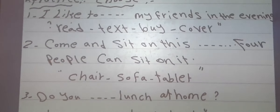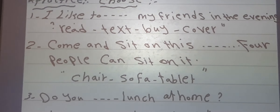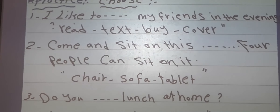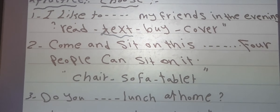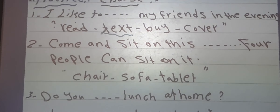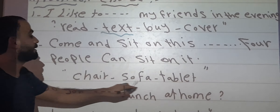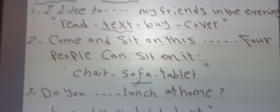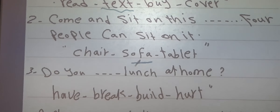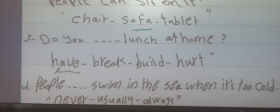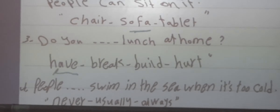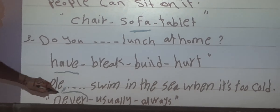Let's practice. Number 1: I like to _____ my friends in the evening — the right answer is text. I like to text my friends, because text means to send messages. Number 2: come and sit on this _____, four people can sit on it — the answer is sofa. Number 3: do you _____ lunch at home? The answer is have — do you have lunch at home? The last one: do you _____ swim in the sea when it's too cold? The answer is never.